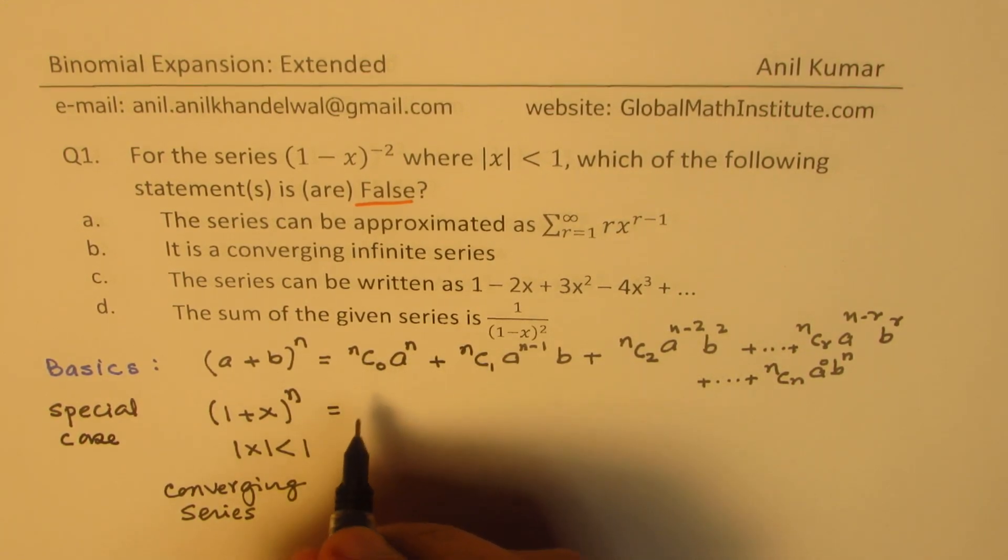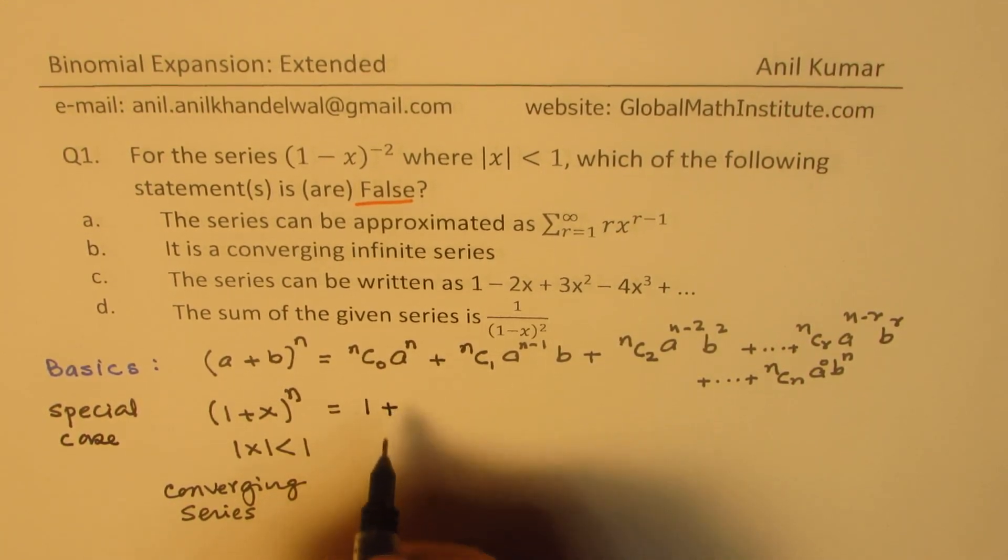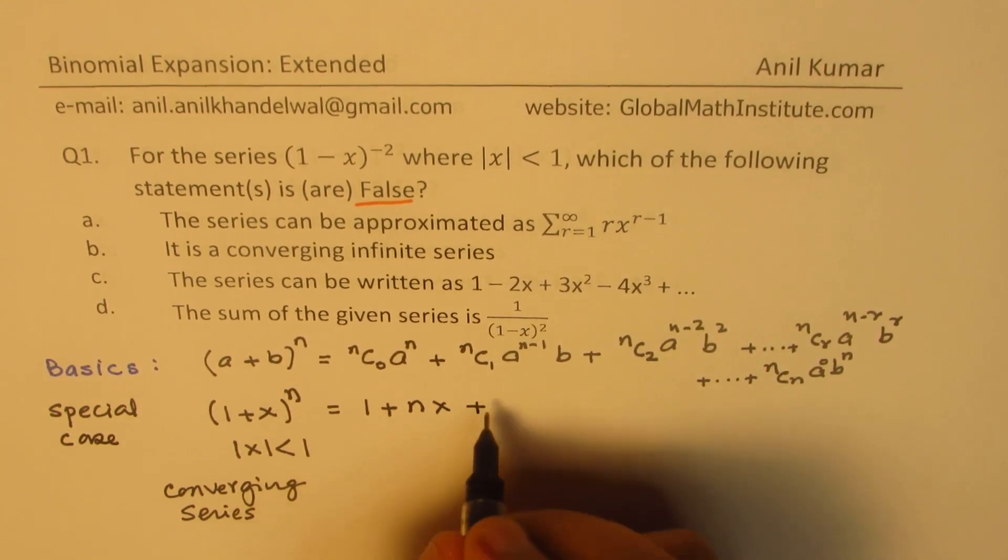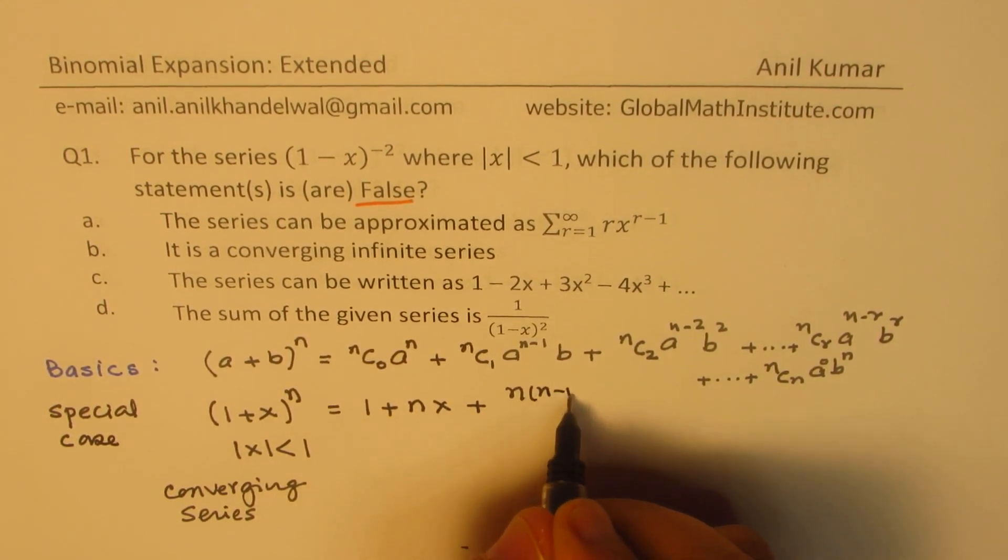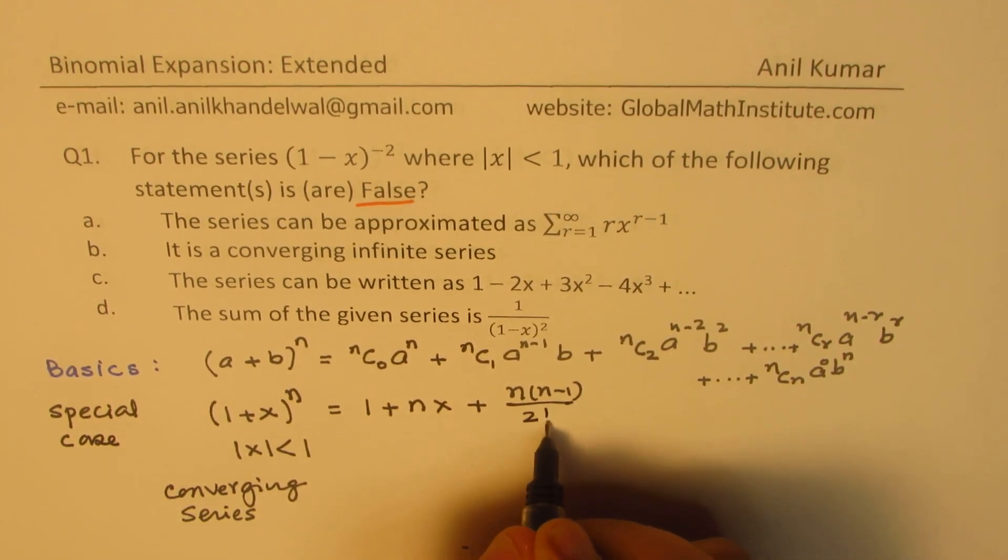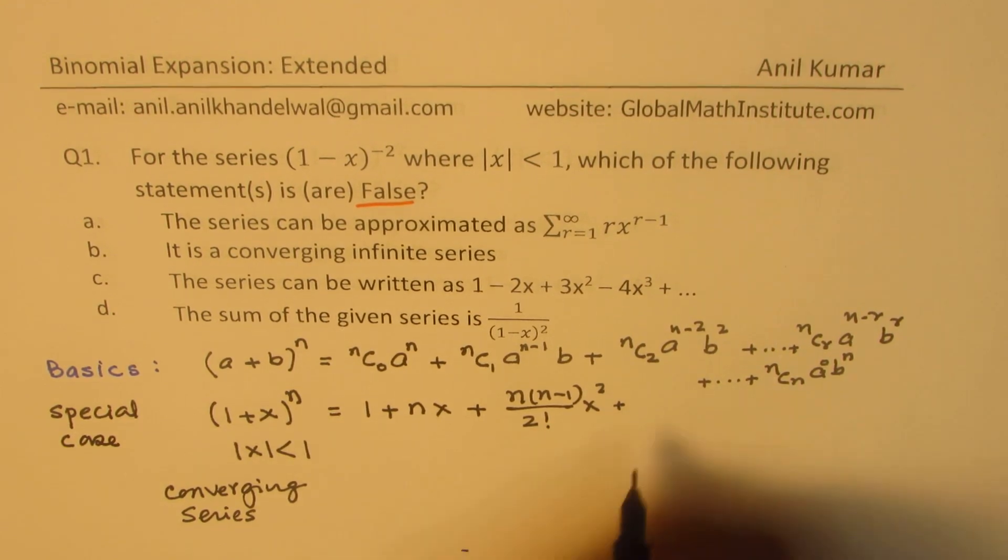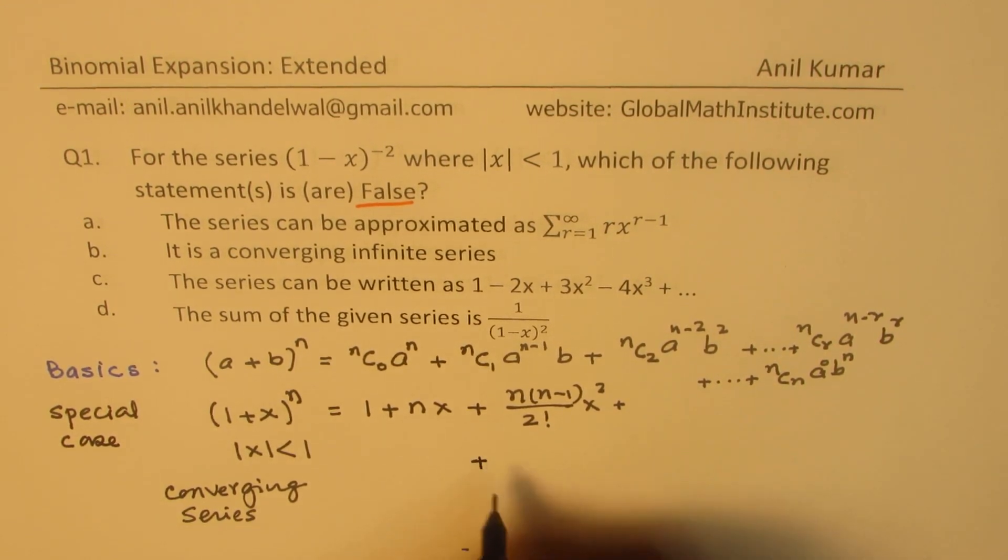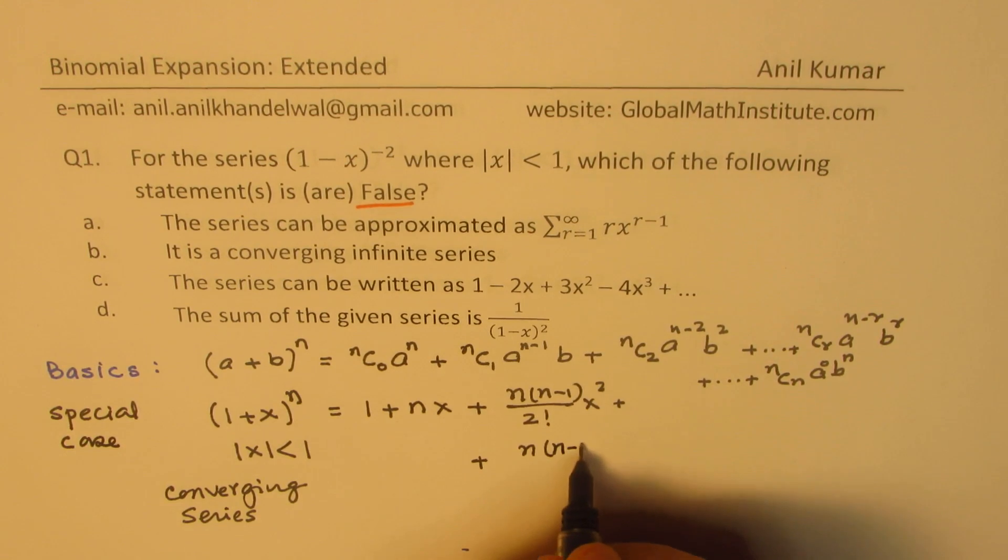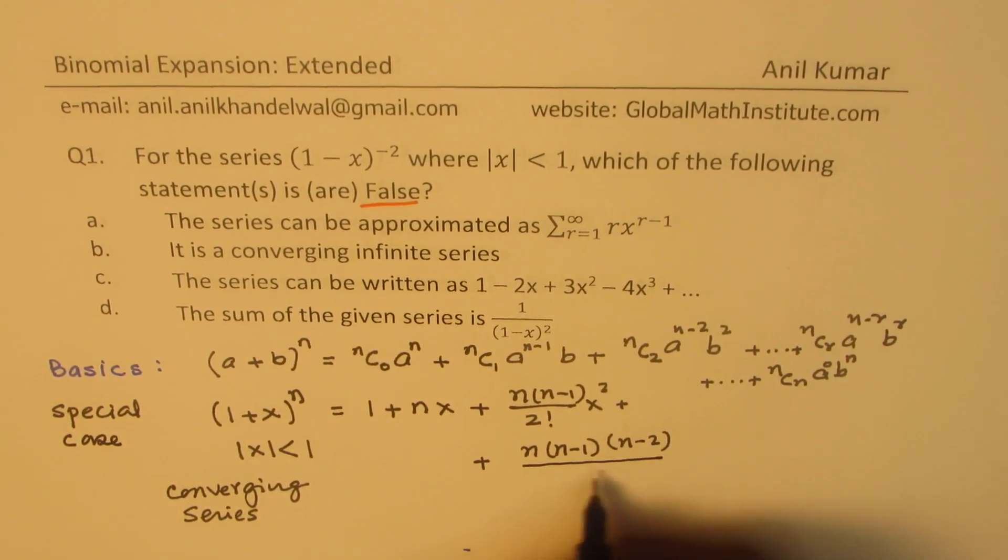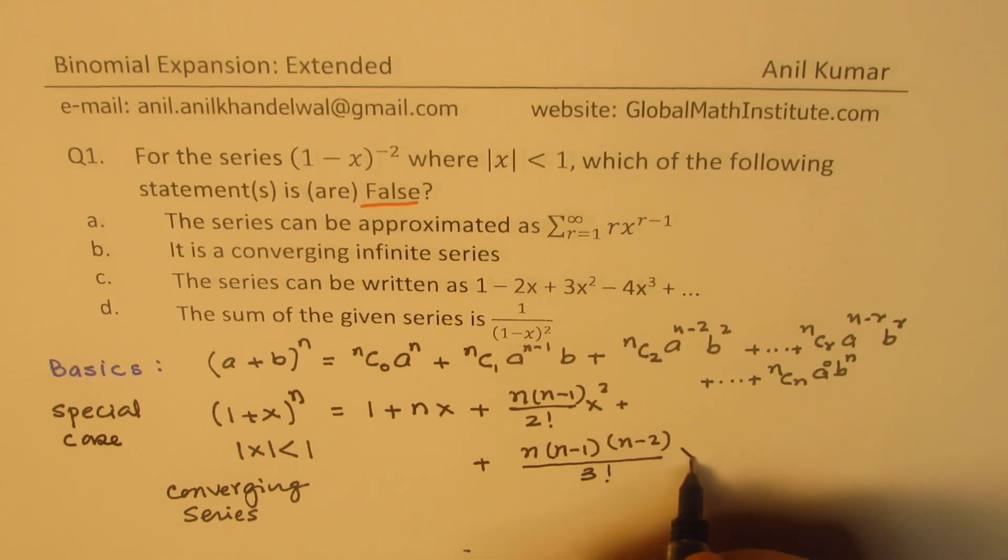And it could be expanded as, writing down the coefficients in a simpler form: 1 + nx + n(n-1)/2!·x² + n(n-1)(n-2)/3!·x³ + and so on.